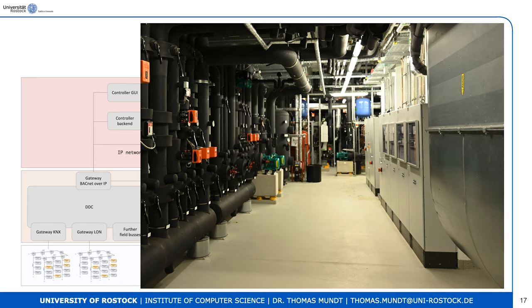Usually controllers are installed in cabinets. On the left-hand side you can see parts of the heating system. There are a lot of orange boxes — these are valves that can open and close. Depending on the demand for heating in the building, the controller will open one of those valves to let the hot liquid flow to that part of the building and enable heating of several rooms.